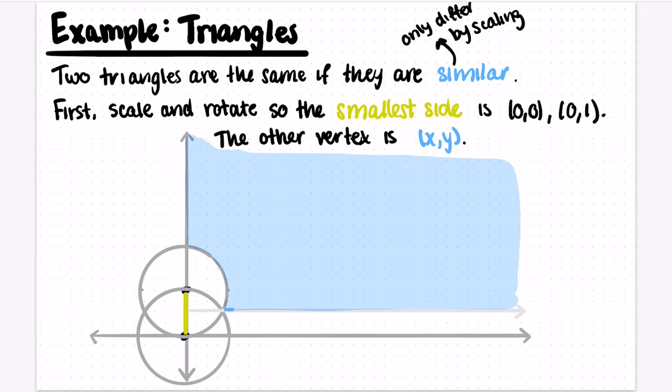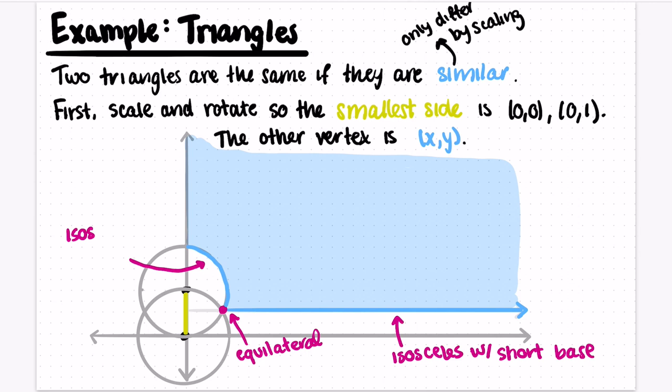That leaves us with this blue region. Let's look at what the triangles in there correspond to. Points along this bottom blue line correspond to isosceles triangles with short bases. The pink point here corresponds to the equilateral triangle. Points along this blue curve correspond to triangles with wide bases.